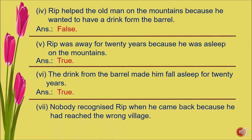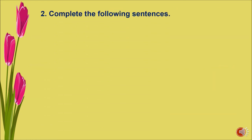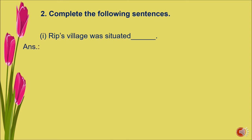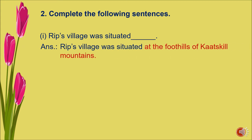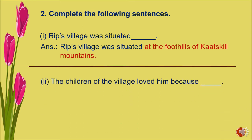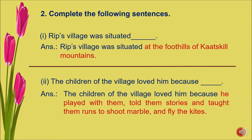Number seven — nobody recognized Rip when he came back because he had reached the wrong village: false. Question number two: complete the following sentences. Number one — Rip's village was situated at the foothills of the Catskill Mountains. Number two — the children of the village loved him because he played with them, told them stories, and taught them how to shoot marbles and fly kites.